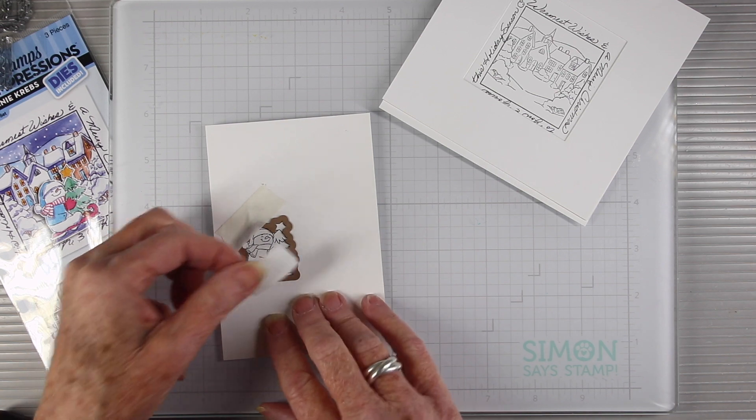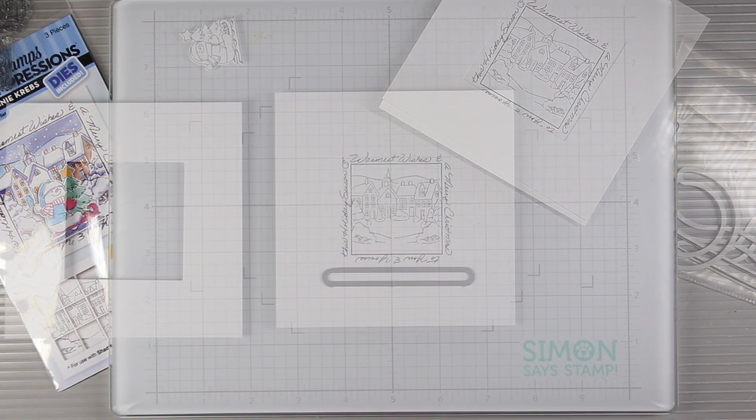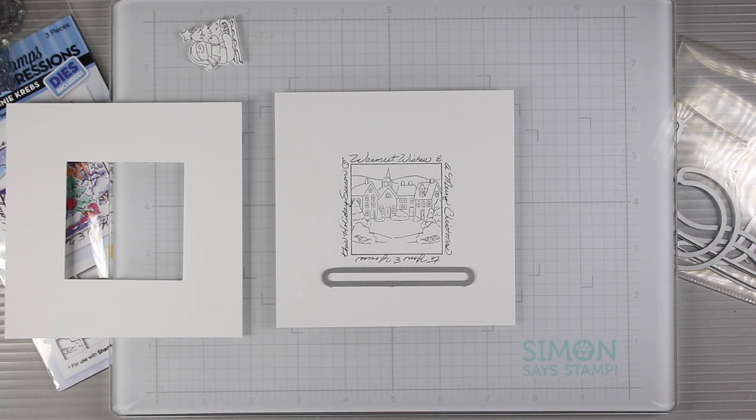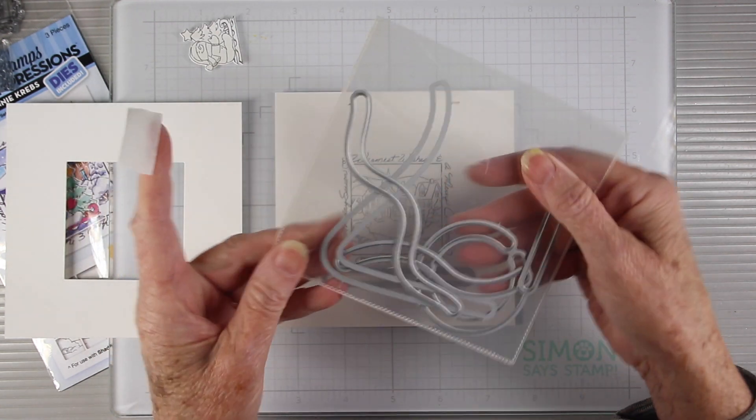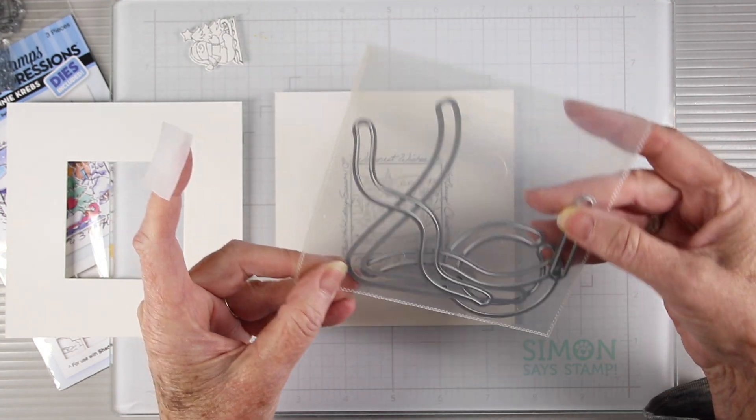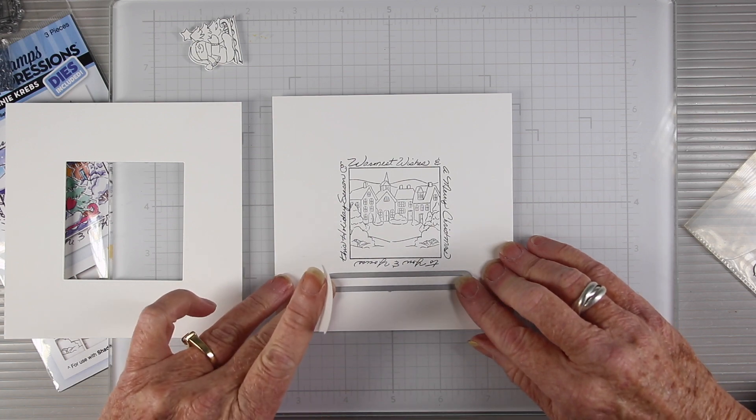I have also stamped my little snowman on a piece of white cardstock and right now I'm getting ready to die cut. The next step is to add the die cut for my sliding mechanism. I'm using the simonsaysstamp slide and glide dies, using the longest straight cutting die to fit under my stamped image.